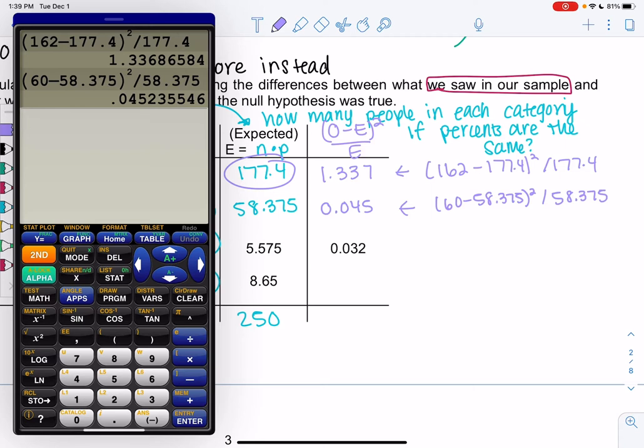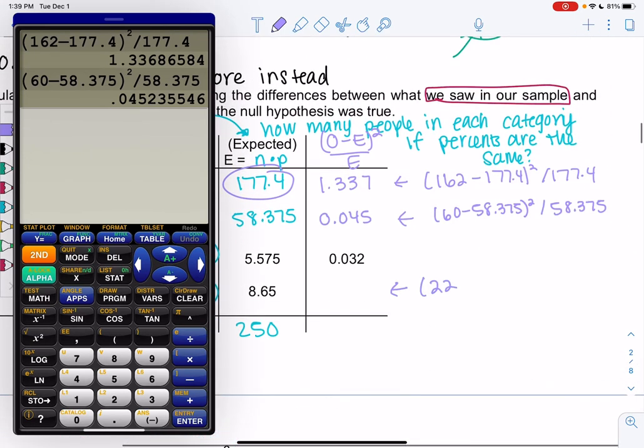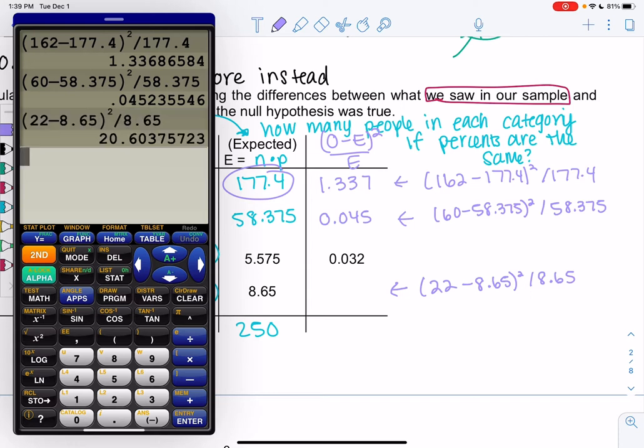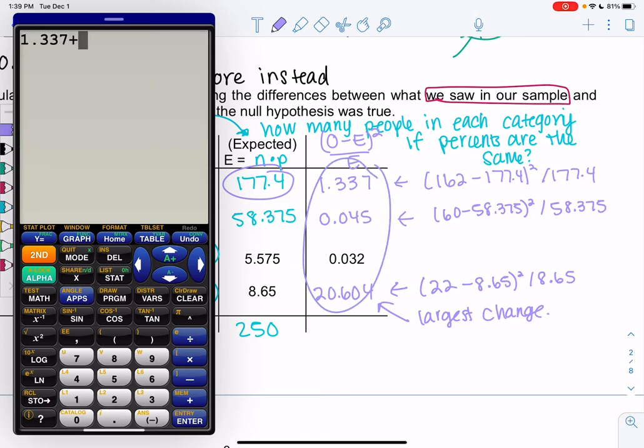Let's jump to other - we get 22 from the sample minus 8.65 squared, divided by 8.65. I'm expecting the largest number here because this one had the largest change, the largest difference. We get 20.604. So this one was the largest change. What we're going to do is add them up. So I'm going to add up these four numbers.